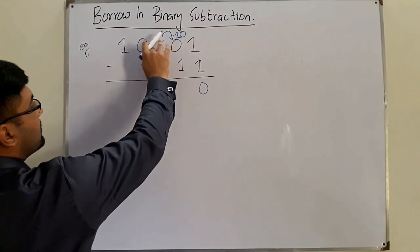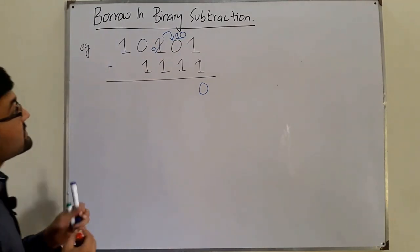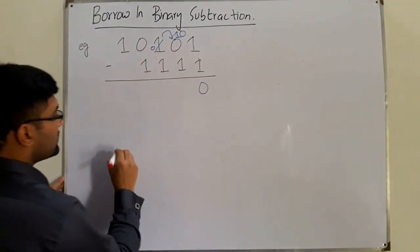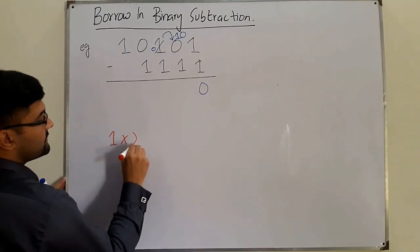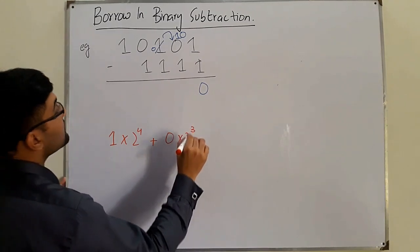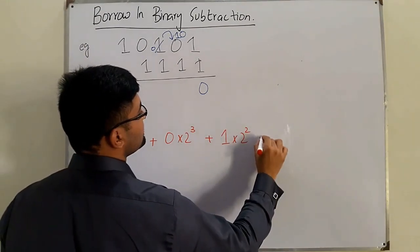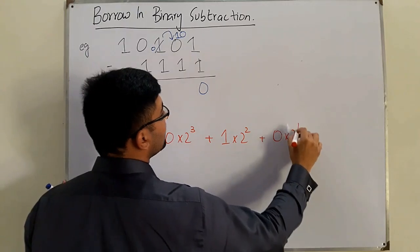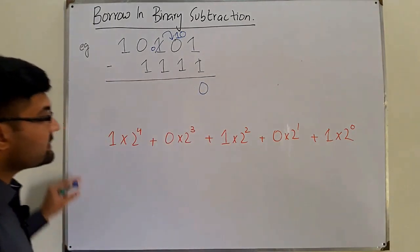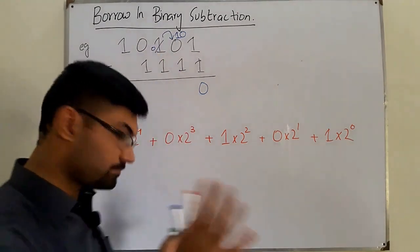Now I explain this. I write the number as a sum of its positional weights. So this is 1×2⁴ + 0×2³ + 1×2² + 0×2¹ + 1×2⁰. These are the positional weights of the number I have written. Is it clear till here?